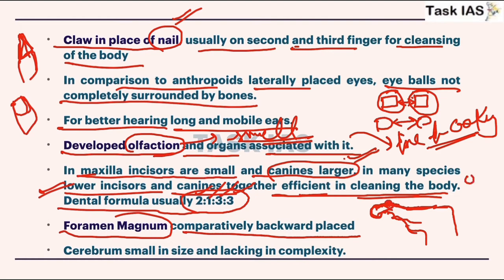If you observe the head and neck portion, the vertebral column angle is almost 180 degrees. That's why the foramen magnum — a kind of opening which helps in transfer of nerves from the brain to the vertebral column — is present very laterally. But in humans, as the neck and head becomes straight, the foramen magnum shifts from the lateral position forward to a more central placement.